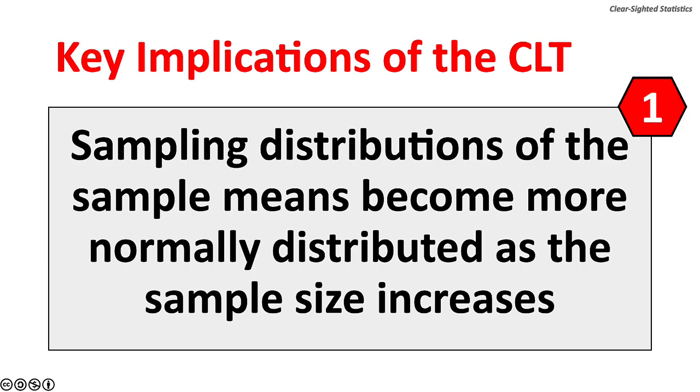There are four key implications of the central limit theorem. One, sampling distributions of the sample mean become more normally distributed as the sample size increases.